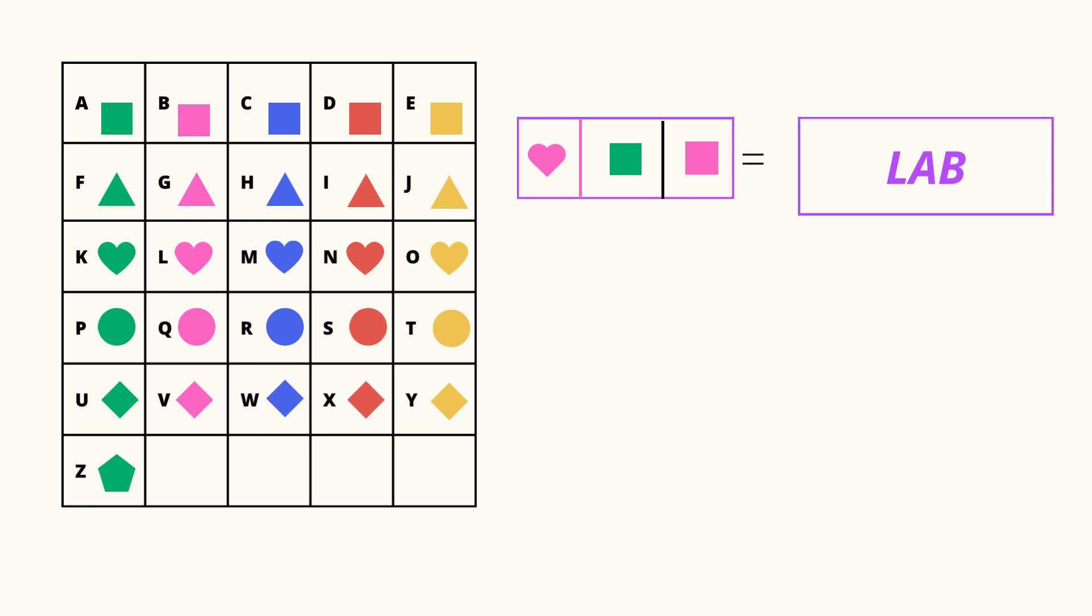Next one. Your turn. You have to find out. Red heart, green square, pink square. What will the word be? Yes. Nab. N-A-B, nab.